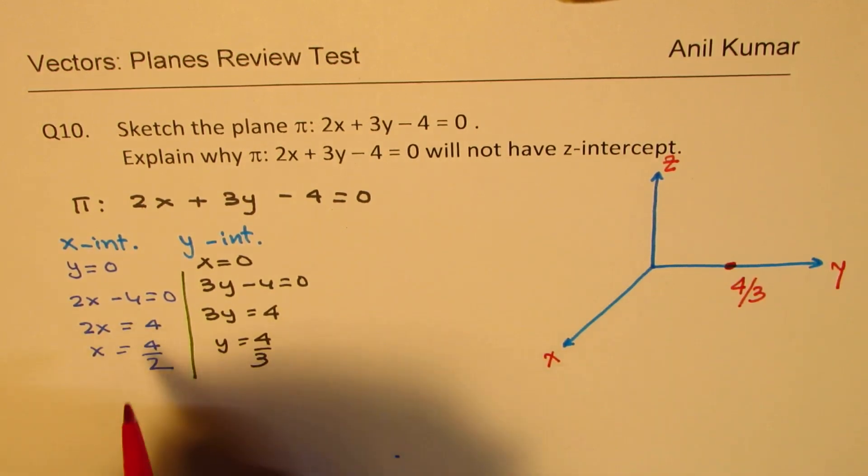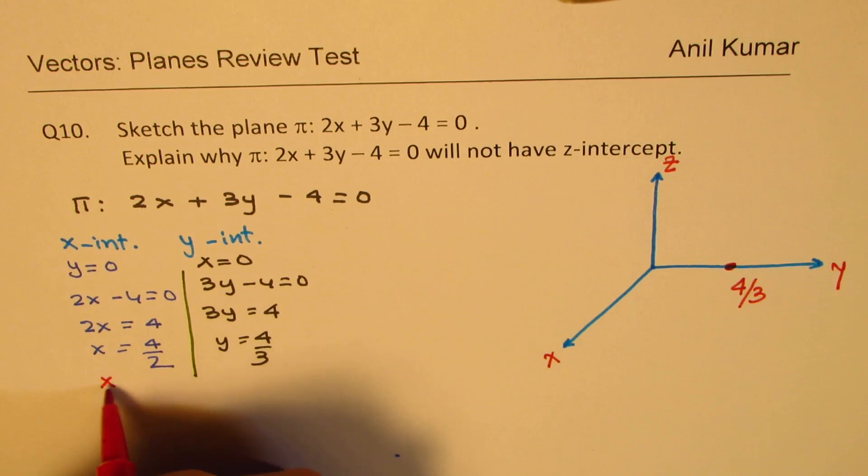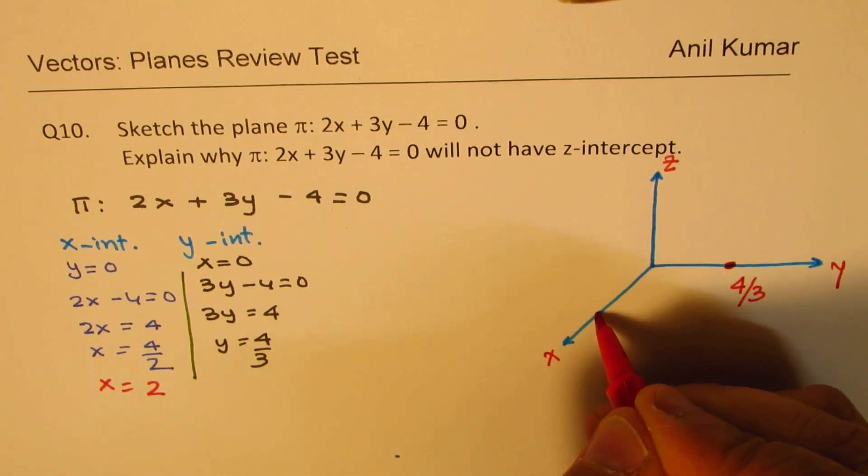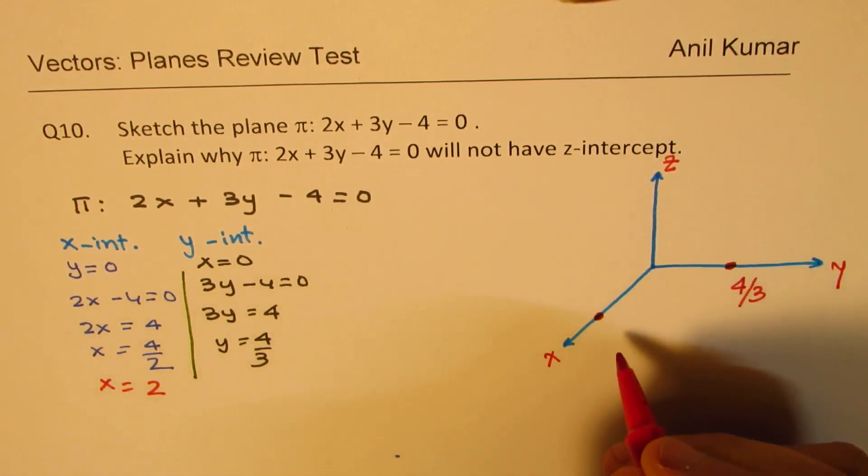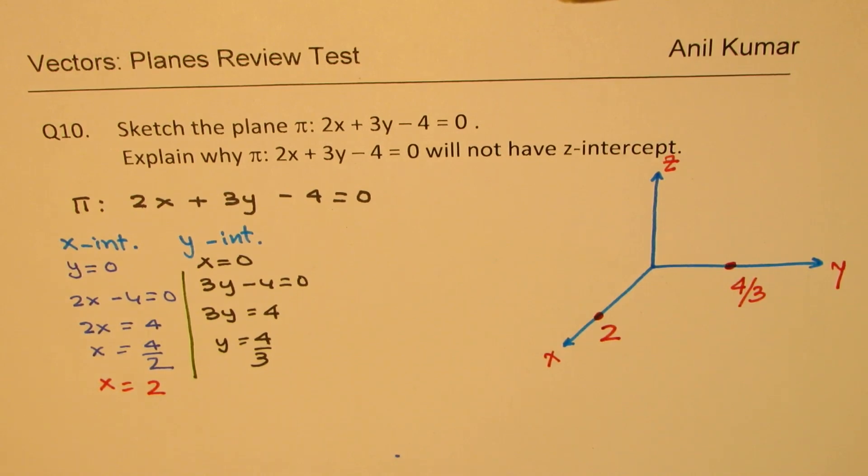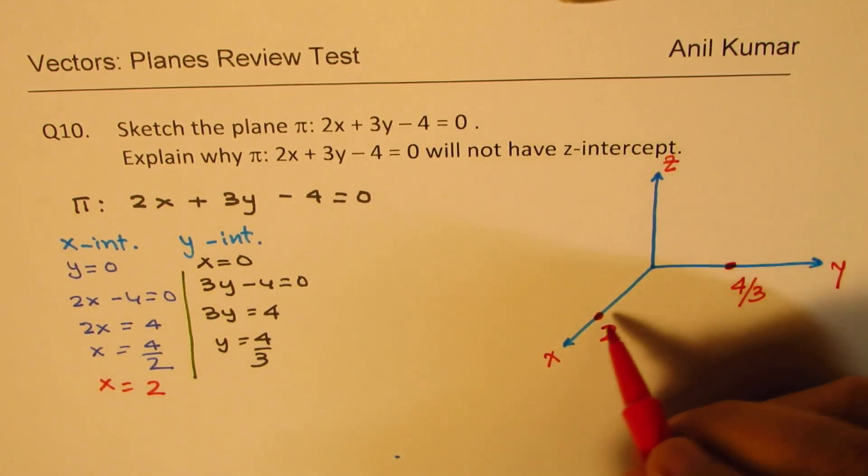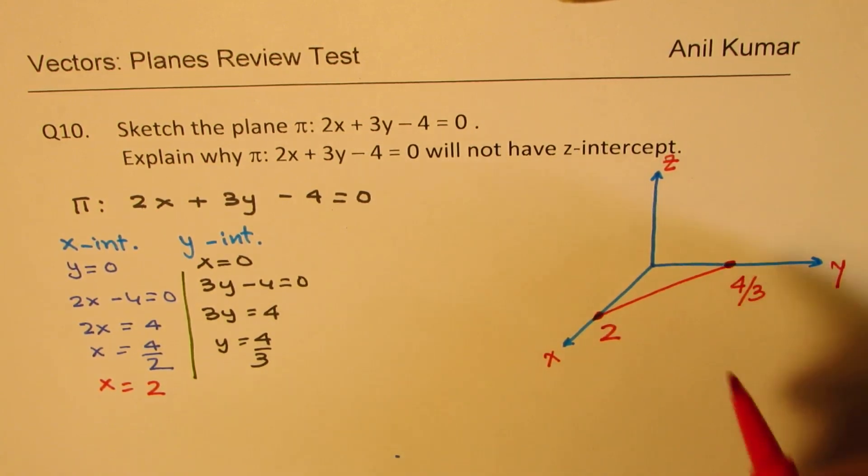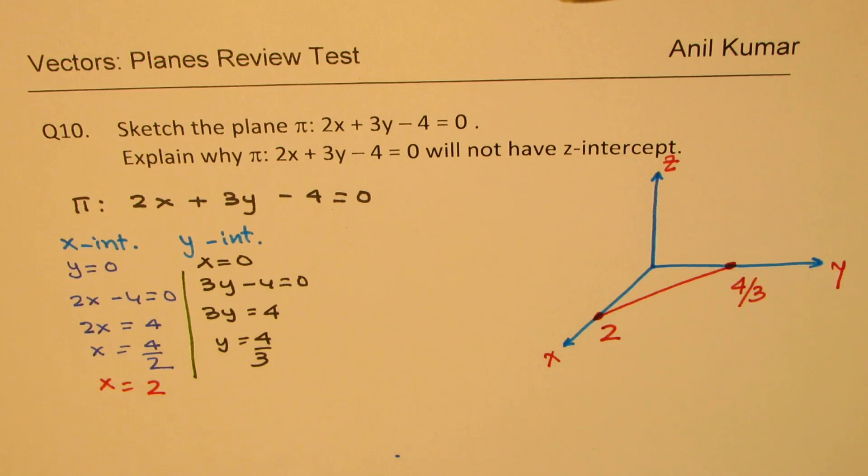And now let's say this point, which is x = 4/2, which basically means 2. So 2 will be slightly longer than this. It's all approximate diagrams which I'm making for you. So that becomes the x-intercept at 2. Now to sketch the plane, what we do is that we actually join these two, the intercepts. So the plane actually infinitely extends.